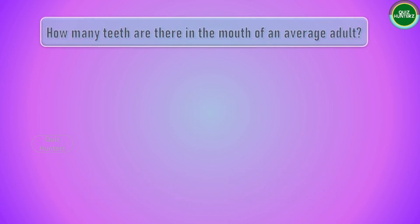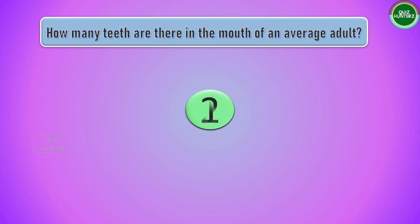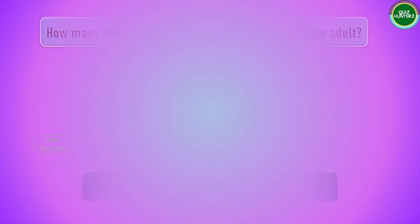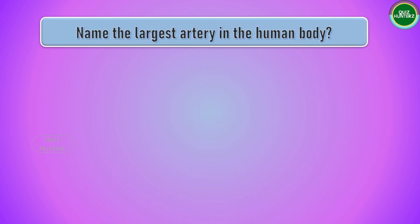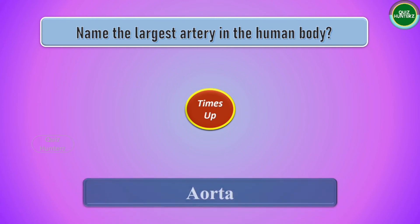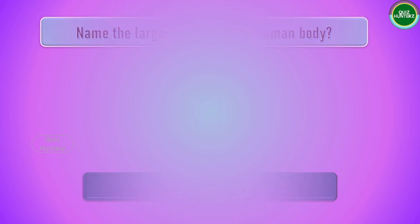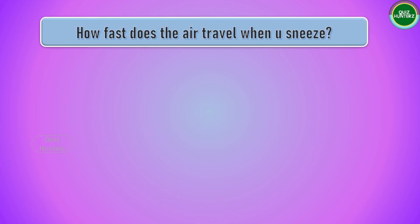Next question: how many teeth are there in the mouth of the average adult? The answer is 32. Next question: name the largest artery in a human body. The answer is the aorta.